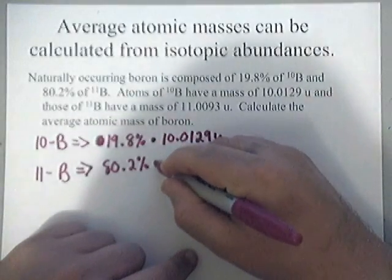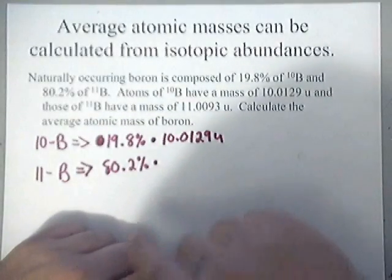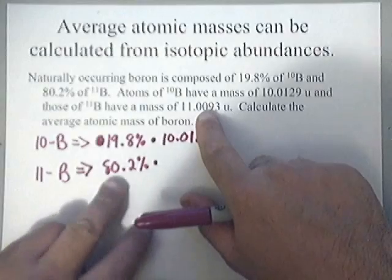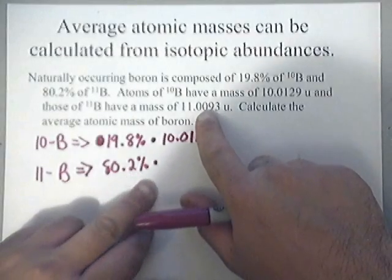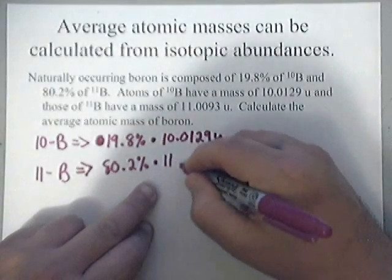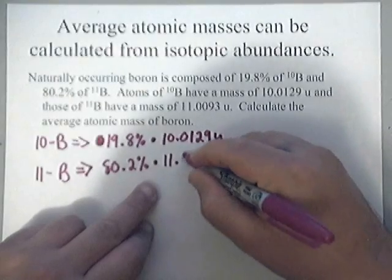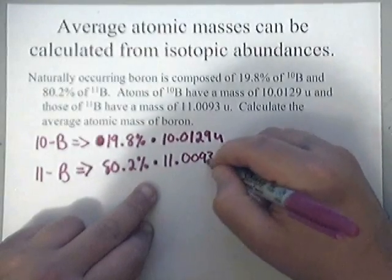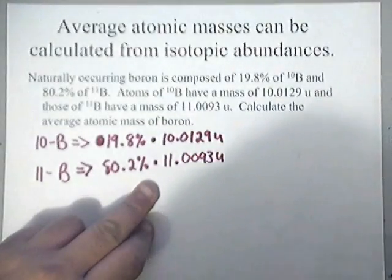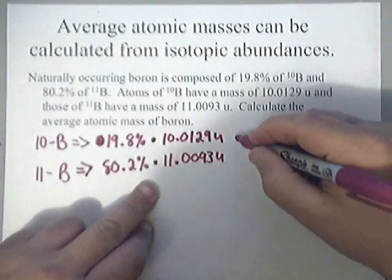And down here, you're going to multiply 11 by the percentage for 80.2% by 11.0093U. So basically, what we have here is the following.